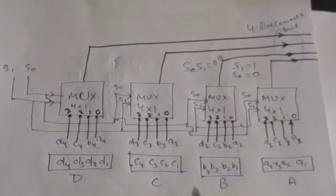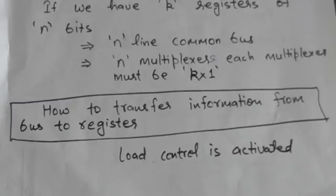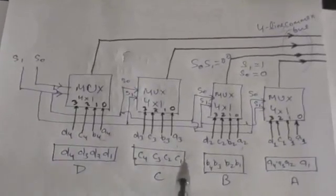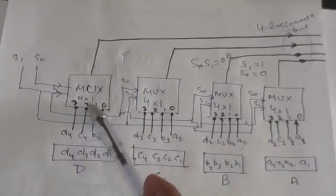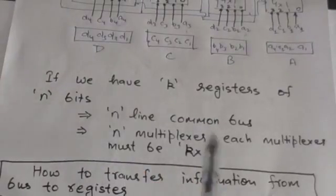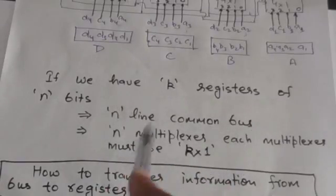To transfer information from the bus to a register, the bus lines are connected to the inputs of all registers, and the load control of the destination register is activated. For four registers of four bits we needed four multiplexers of size 4×1. In general, for K registers of N bits, we need an N-line common bus and N multiplexers each of size K×1.